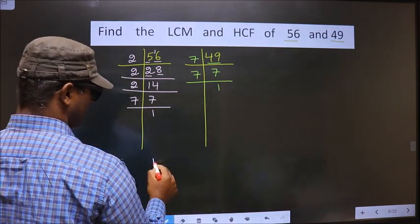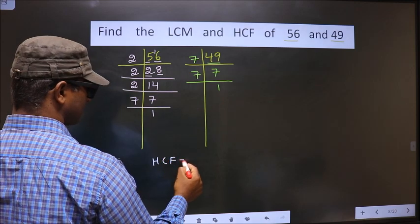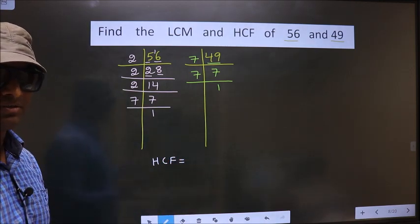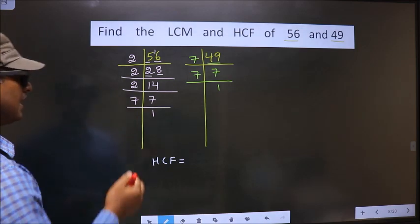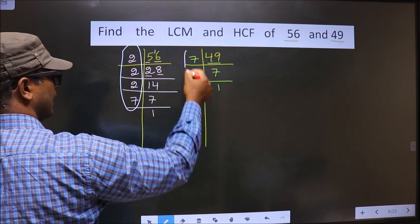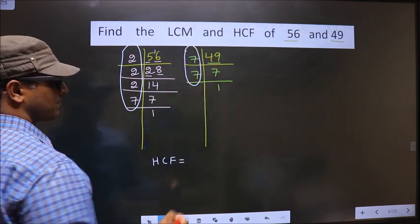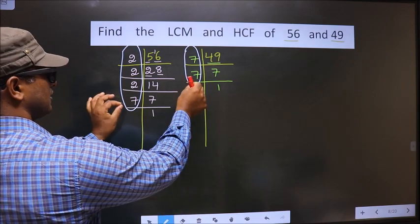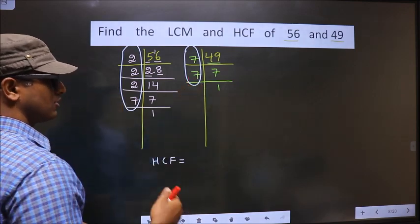So, now our HCF is—HCF is the product of numbers that are present here and also here. So, now we should find the numbers that are present in these two places. So, let us find.